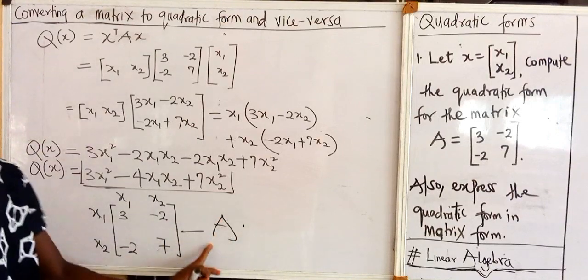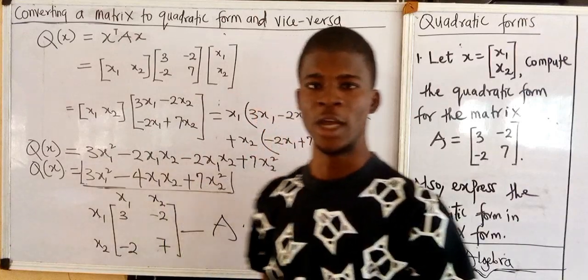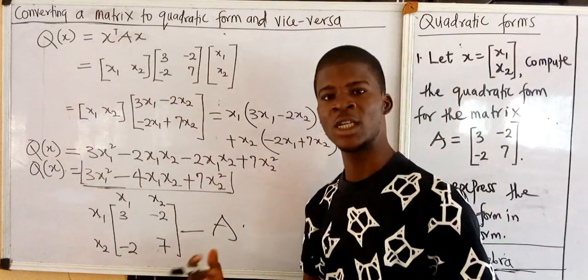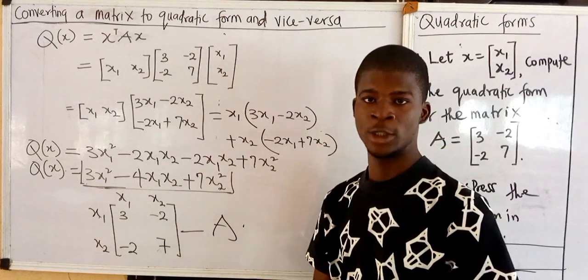Exactly what we were given initially. So this is how to change the matrix to a quadratic form and a quadratic form back to the matrix.